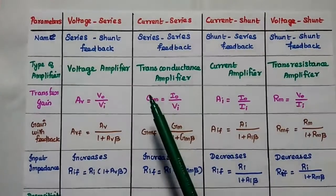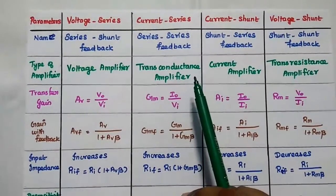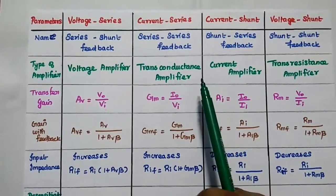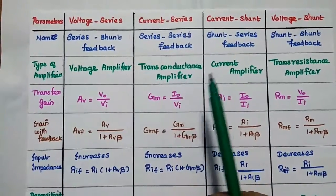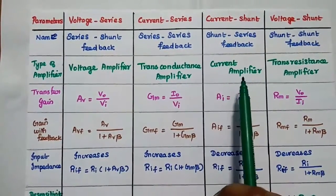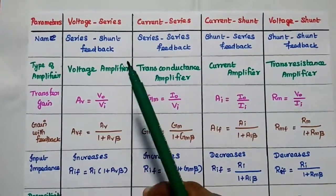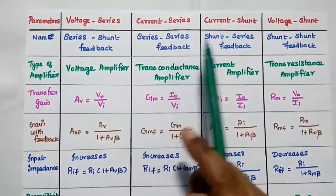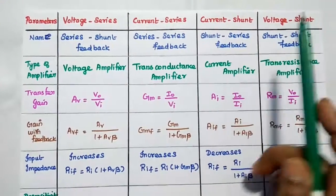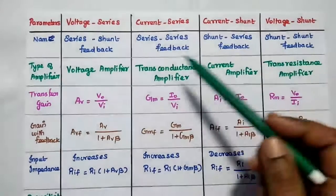Dear students, now we are going to discuss the comparison of the basic types of feedback topologies. The topologies are: voltage series, current series, current shunt, and voltage shunt.